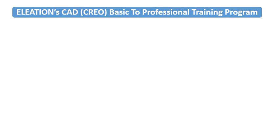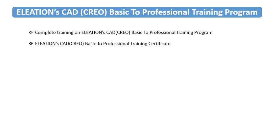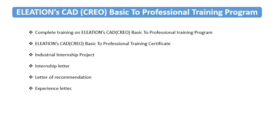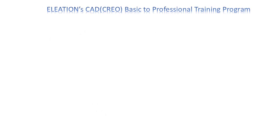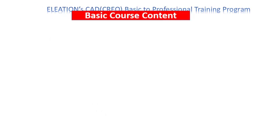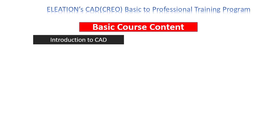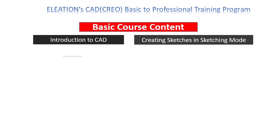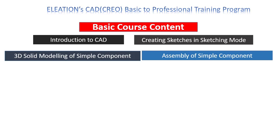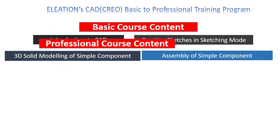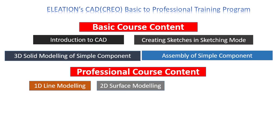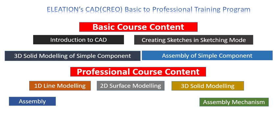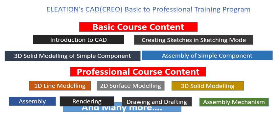The Eleation CAD Creo Basic to Professional Training Program includes complete training on the course content, a training certificate, an Industrial Internship Project, an Internship Letter, a Letter of Recommendation, and an Experience Letter. The course content is divided into two categories. Basic course content includes Introduction to CAD, creating sketches and sketching work, 3D solid modeling of simple components, and assembly of simple components. Professional course content includes 1D line modeling, 2D surface modeling, 3D solid modeling, assembly, assembly mechanism, rendering, drawing and drafting, and more.